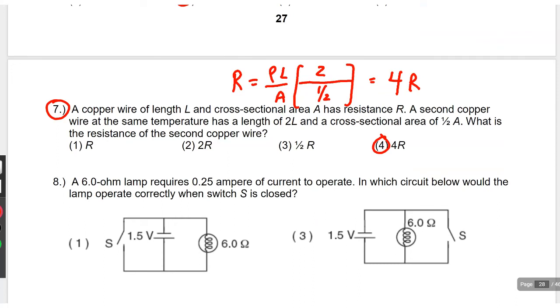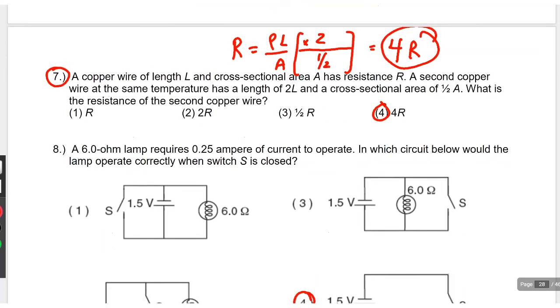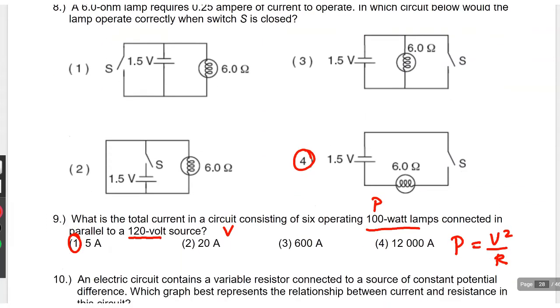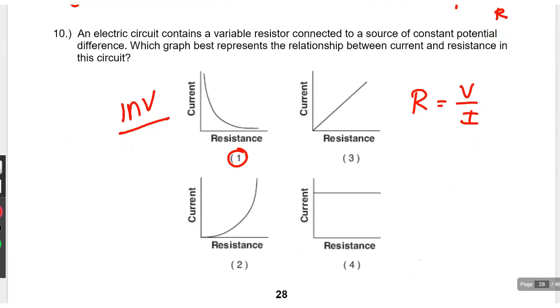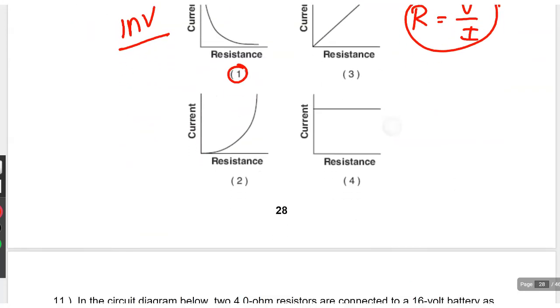Relationship question. This is about resistance and length and area. So, the length is doubled. So, I double the top. Two is on the top. The area is halved. Two divided by one half is four. It's no longer R, but 4R. Because 2 divided by one half is four. This is the inverse relationship. Resistance and current.